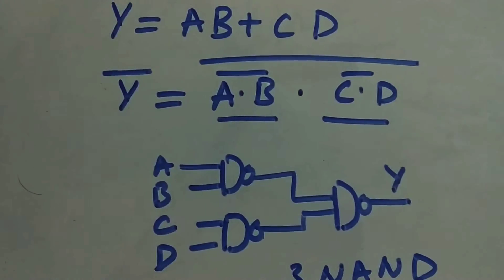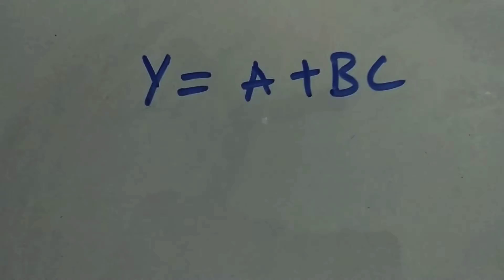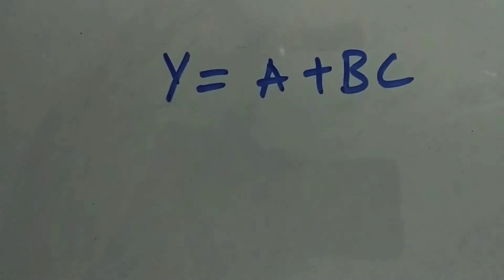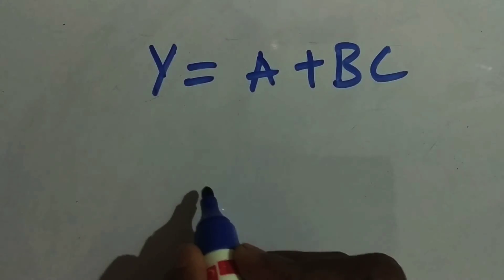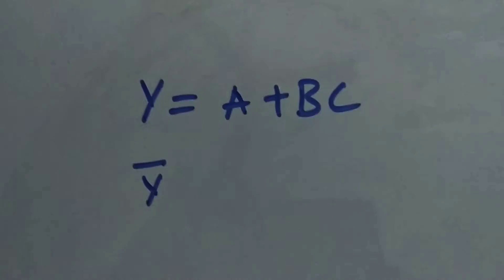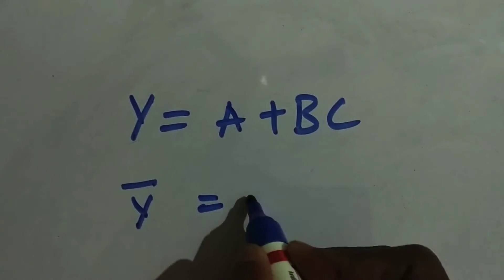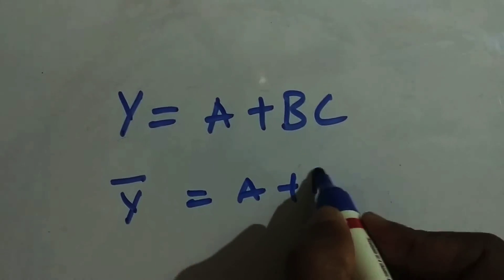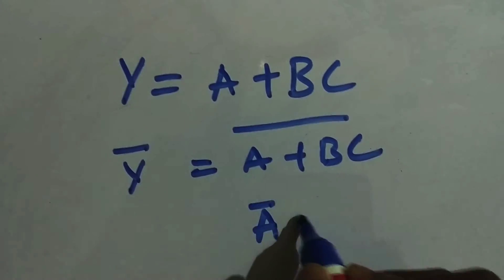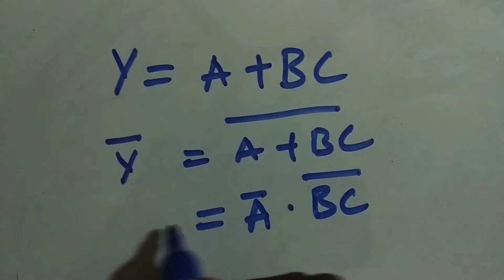Let's take one more small example. Y equals A plus BC. Apply the same procedure: first take Y bar, which is A plus BC whole bar. Then apply De Morgan's law to get A bar dot BC whole bar. Now we have Y bar.